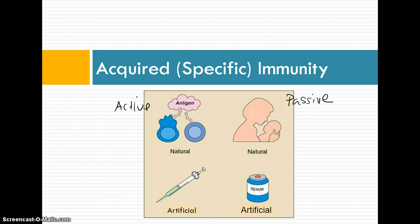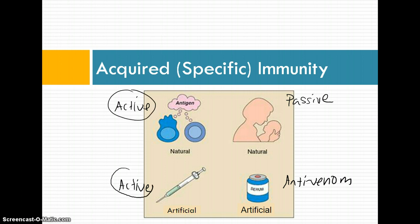On the other end of the spectrum, the same is true for artificial immunity. It can be acquired actively through vaccinations, or artificially through serums such as antivenom, where you're already given a dose of antibodies and you don't have to actually go through the process of gaining immunity. However, in this particular video, we're just going to be looking at both types of active immunity: the natural active and the artificial active.